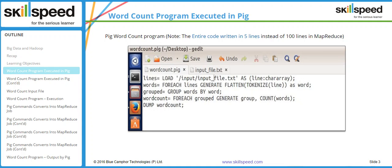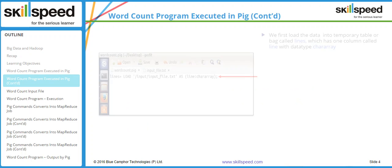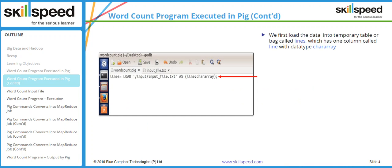Now I will explain the operation of each of these lines one by one. The first line has a LOAD operator. What happens in the first line is that we are creating a relation. You can see that there is something called 'lines' and then it says equal to LOAD. LOAD is the function which will create a relation or a pointer inside Pig.